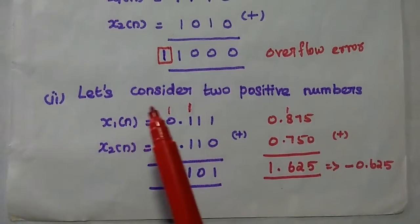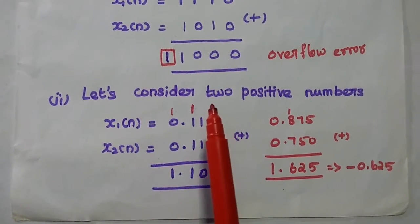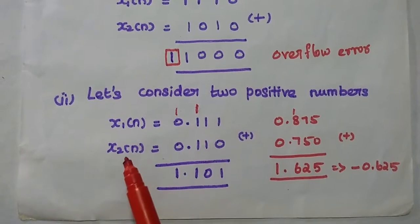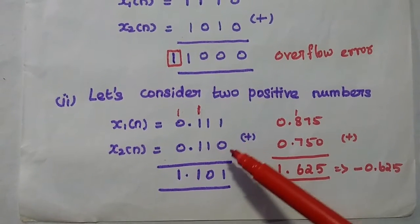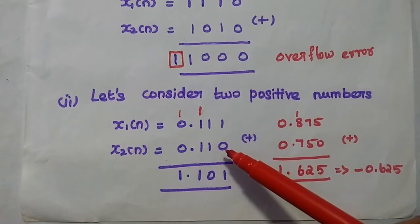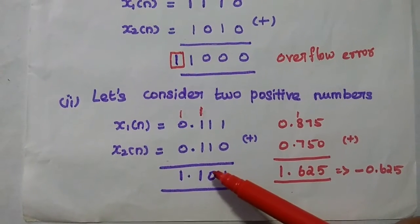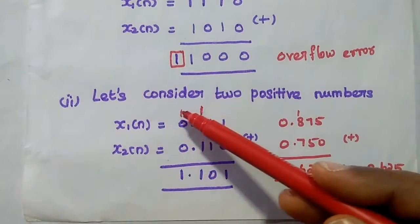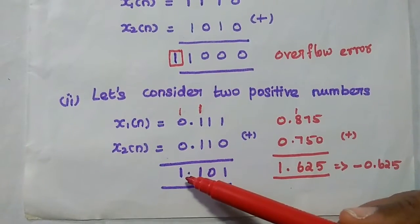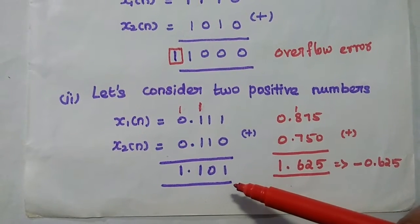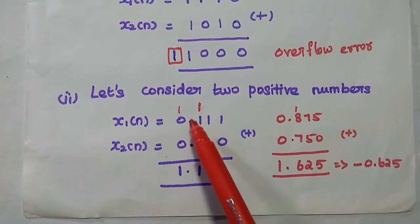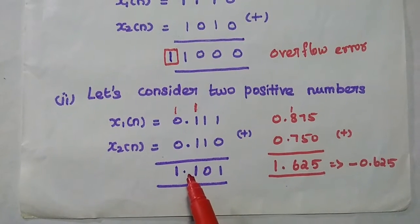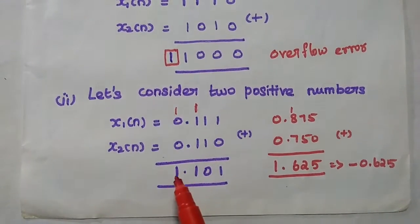In the next example, we consider sign-magnitude values — two positive numbers. x1(n) = 0.111 and x2(n) = 0.110. Adding these two binary values: 1+0=1, 1+1=0 carry 1, 1+1+1=11, so we write 1 and carry 1 to the next bit. The answer comes out as 1.101. Since this is sign-magnitude representation, the MSB represents the sign: 0 is positive and 1 is negative. So the result is interpreted as a negative value.